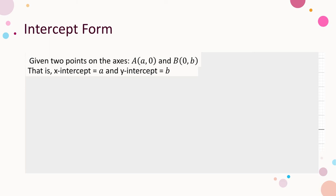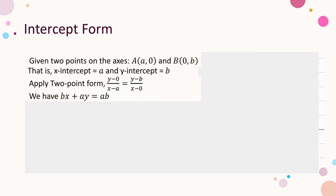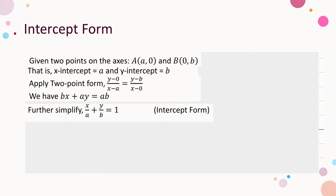Applying the two-point form on these two points and simplifying, we have x/a + y/b = 1 — a very neat form. That is, x over the x-intercept plus y over the y-intercept equals 1. We call this form the intercept form. When we are given two intercepts, we can get the equation of the line in the intercept form directly.